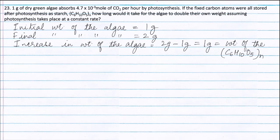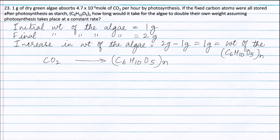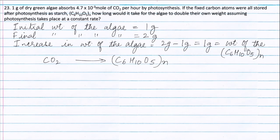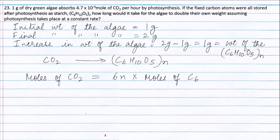The entire carbon dioxide which is absorbed is changed into starch C6H10O5 whole N. Now applying the principle of atom conservation on carbon atoms, we can write: moles of carbon dioxide is equal to 6N into moles of starch, that is C6H10O5 whole N.